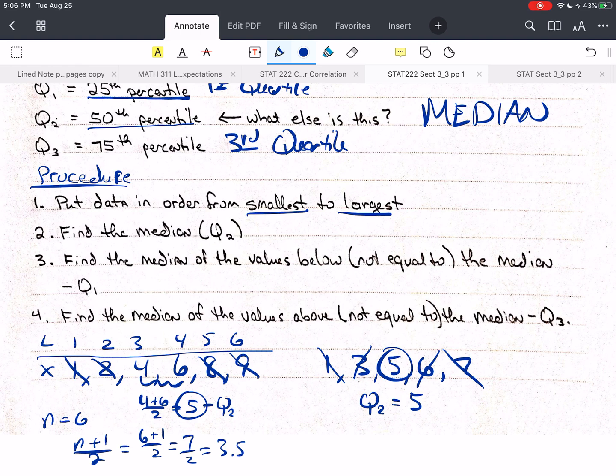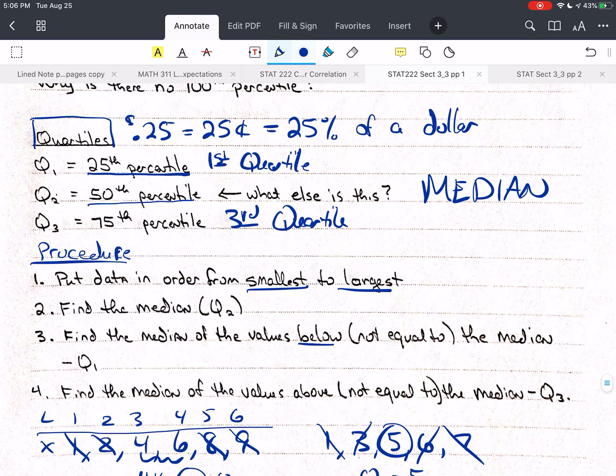After we find Q2, then we're going to take all the values that are below, but not equal to, the median. So to the left. And we're going to find the median of that. And that's going to be Q1. Then we're going to find the median of the values that are above Q2. And that value will be Q3.